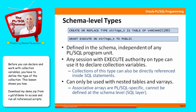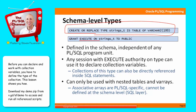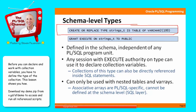For nested tables and varrays, you can also create your type at the schema level, meaning in the SQL layer as a database object. Once you've created the type, you grant EXECUTE on the type — not SELECT — and you can assign it to roles, schemas, etc. The advantage is that any schema with execute authority can use the type, making it as globally available as a package-based type. Additionally, if you want to create a relational table with a nested table or varray column, you must create the type at the schema level. Note: schema-level types are only allowed for nested tables and varrays, not for associative arrays.